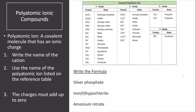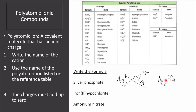We can also find formulas from names. For the first example, silver phosphate — let's write the ions separately. The cation is silver, which only has a plus 1 charge. Phosphate is PO₄ with a negative 3 net charge. We cross the charges to get Ag₃PO₄. There are three silver ions for every one phosphate ion.